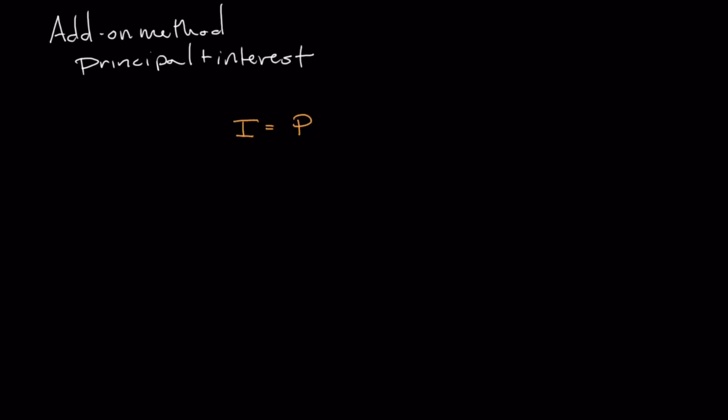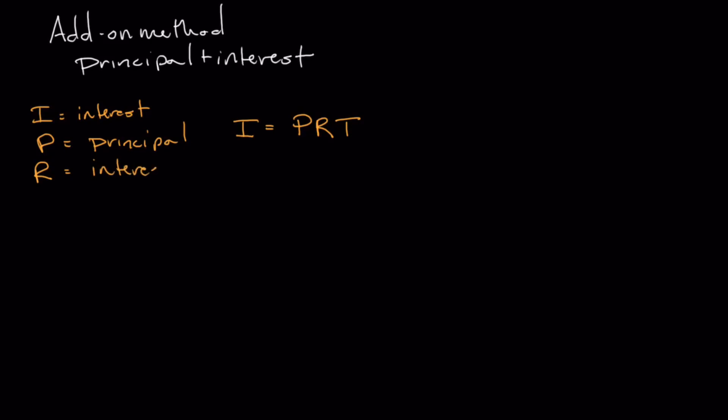The equation to calculate interest, abbreviated as I, is P times R times T — where P represents our principal, R is our interest rate, and T is time, commonly expressed in the number of years. On the left-hand side I'll put a legend so you know exactly what each letter represents.